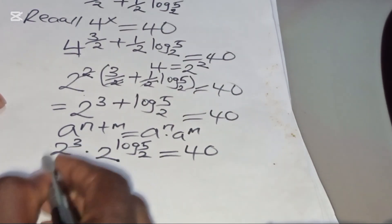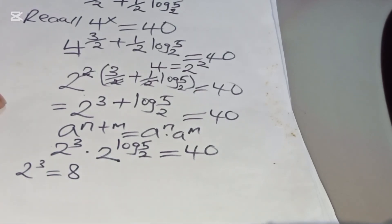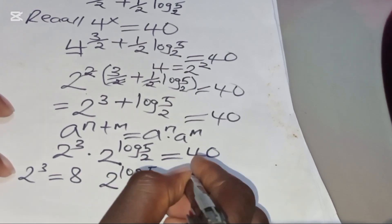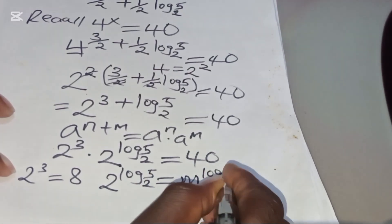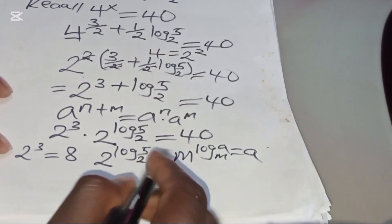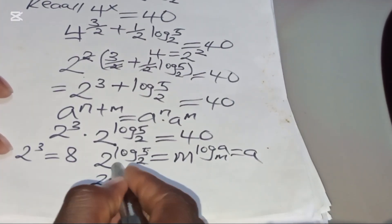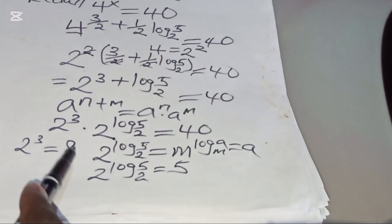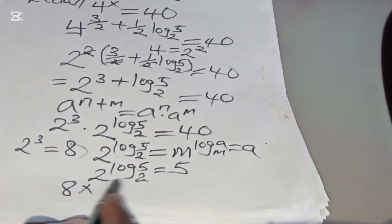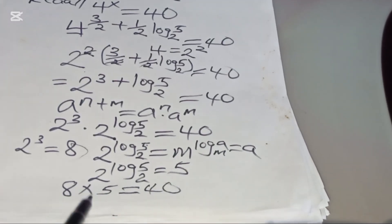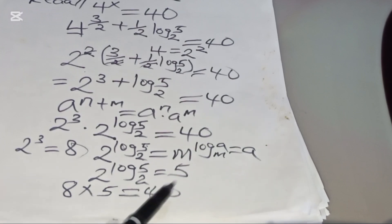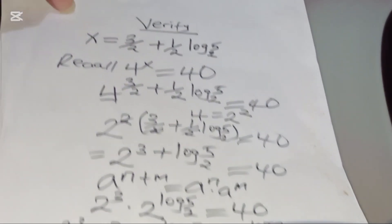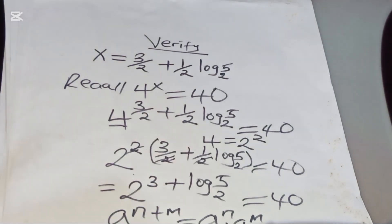Now, 2³ equals 8. And 2^(log₂5) is in the form m^(log_m(a)), which equals a. So 2^(log₂5) equals 5. That means we have 8 multiplied by 5, which equals 40. The left-hand side equals the right-hand side, confirming that x = 3/2 + ½·log₂(5) satisfies the equation.